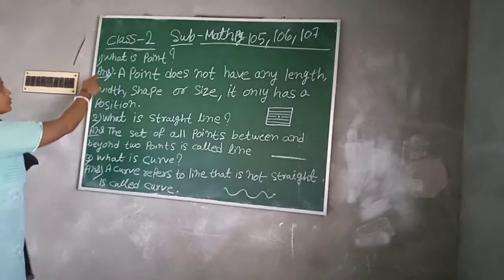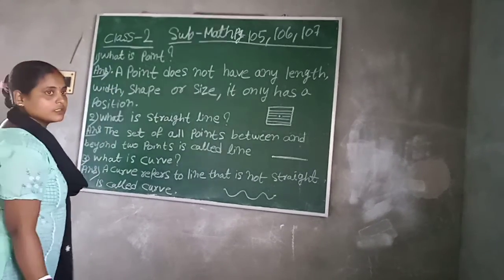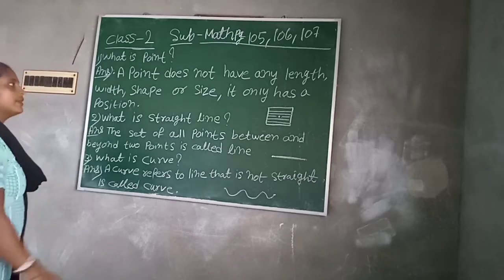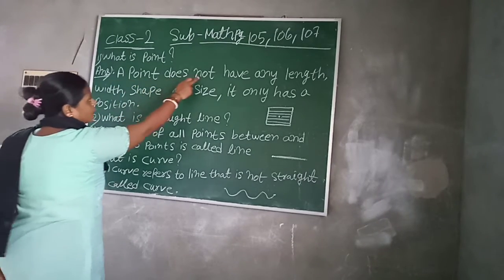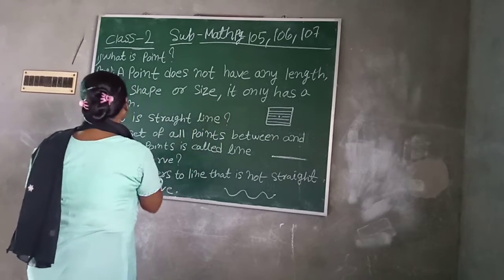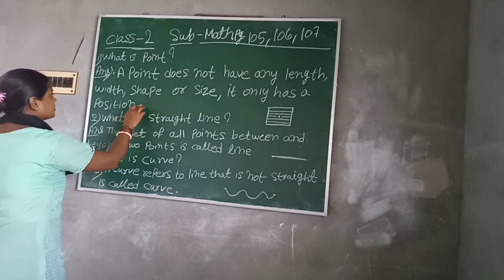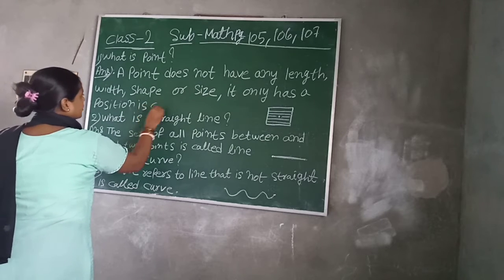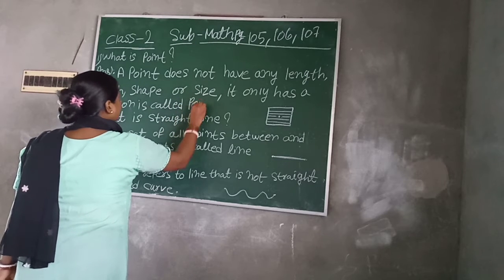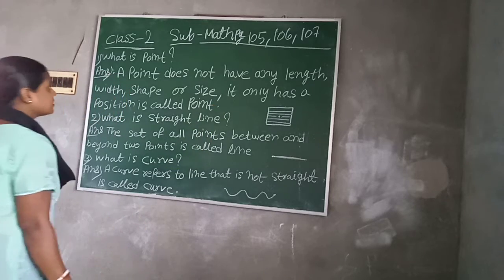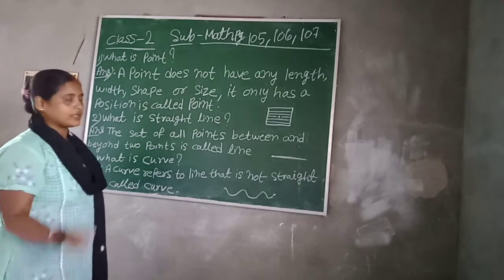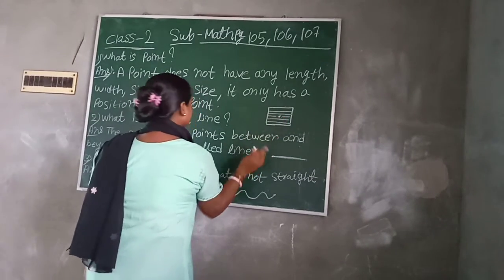I will explain what is point. A point does not have any length, width, shape, or size. It only has a position. It is called point. Next,